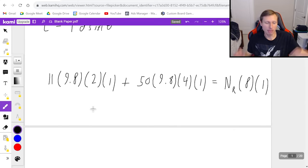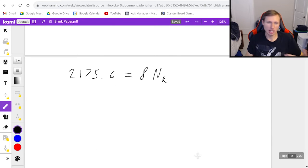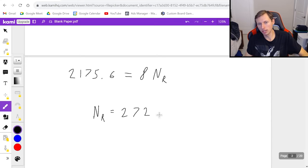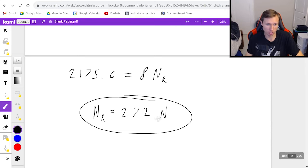So now I get my calculator and solve for NR. For the left side of the equation, I get 2175.6, and on the right side I have 8 NR. If I want to solve for NR, I divide both sides by 8. That gives me a final answer of NR equals 272 newtons. We're still talking about a force; NR is a force, not a torque. That's because we just solved for the normal force, so it gets newtons.